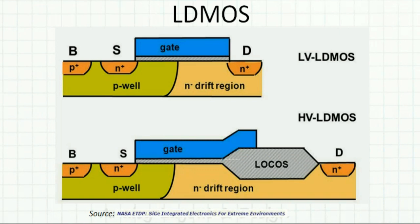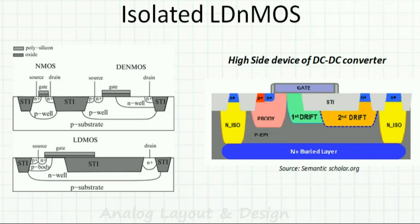LDMOS formation is not standardized — different foundries make the device in different ways. One variant is the low voltage LDMOS, where the gate overlaps with the drain but the drift region is still present. Another variant is the high voltage LDMOS, where the gate does not overlap with the drain and the entire drift region is larger, with a LOCOS region in between. The source and P+ are in the P-well, and the entire N-drift region spans a larger area.